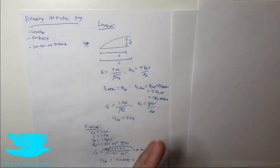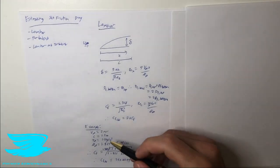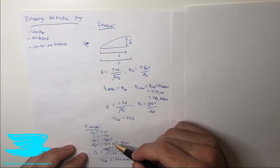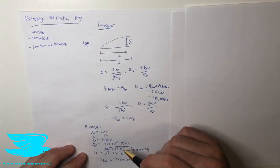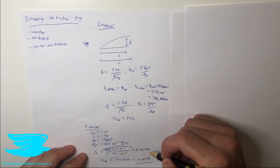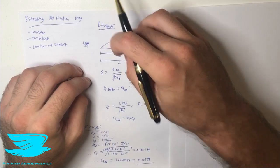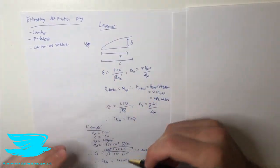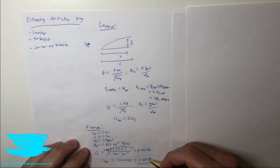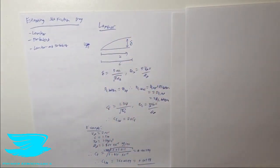Let's go through an example. The free stream velocity is 2 m/s, the flat plate length is 1.5 m, the density of air is 1.2 kg/m³, and the viscosity is 1.825 × 10⁻⁵ Pa·s. Substituting into the CF equation gives 1.328 divided by the Reynolds number, which comes out to 0.00299. That's the skin friction drag coefficient for one surface, and the total skin friction drag coefficient for the laminar plate is 0.00598.